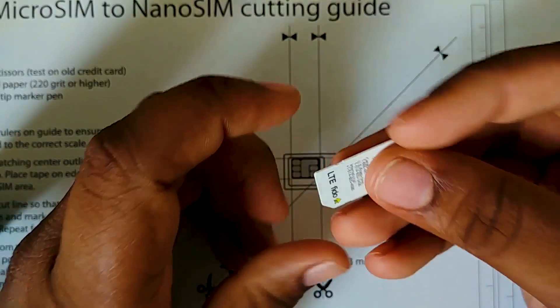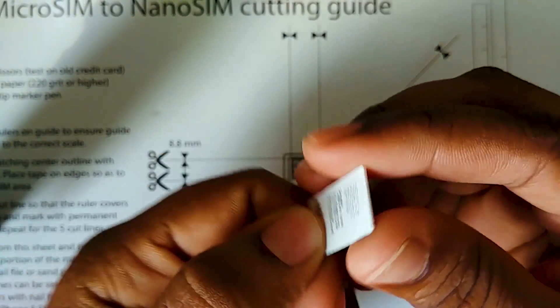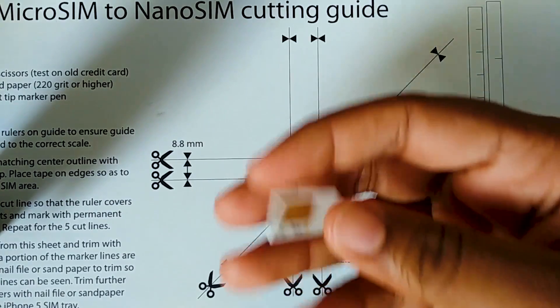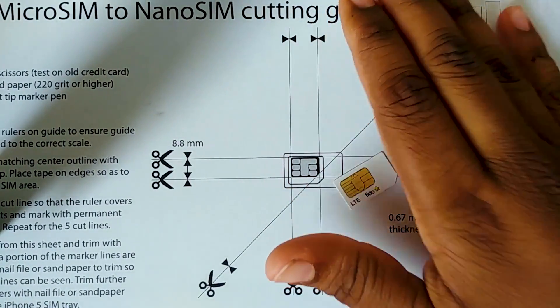The first thing you want to do is take our mini SIM or micro SIM and tape it down to this guideline. I have this guideline link down below if you guys want to cut your own SIM instead of paying others to. But yeah, let's get started.